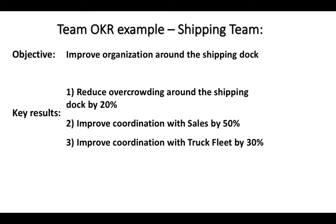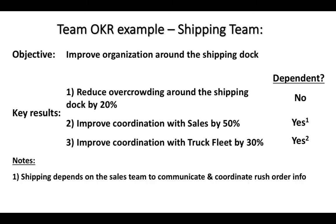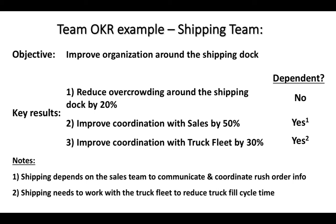Now here is where our horizontal connecting begins. What we can do is add a column that indicates dependency on other teams or business units. We start by simply answering yes or no to whether there is a dependency on other areas of the company. You can see that for numbers 2 and 3 the answer is yes, there is a dependency. Notice that there is a number that goes with the yes answers as we are about to add a note for each.